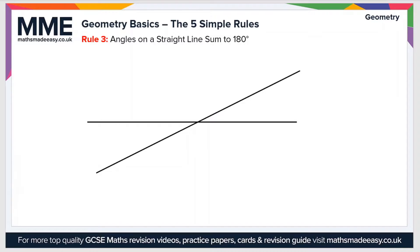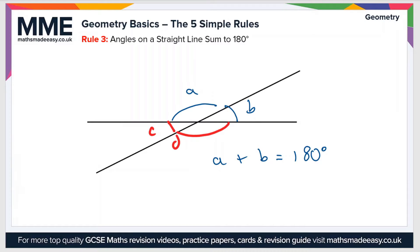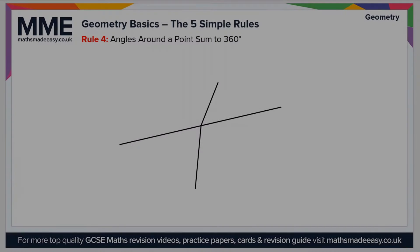Rule number three — perhaps the most common to see on an exam question — is that angles on a straight line sum to 180 degrees. If we have a straight line going across with another line going through it, that forms two angles a and b, and a plus b equals 180 degrees. Similarly, on the other side, c plus d equals 180 degrees, and c plus a, and d plus b, are also each 180 degrees, because they are straight lines.